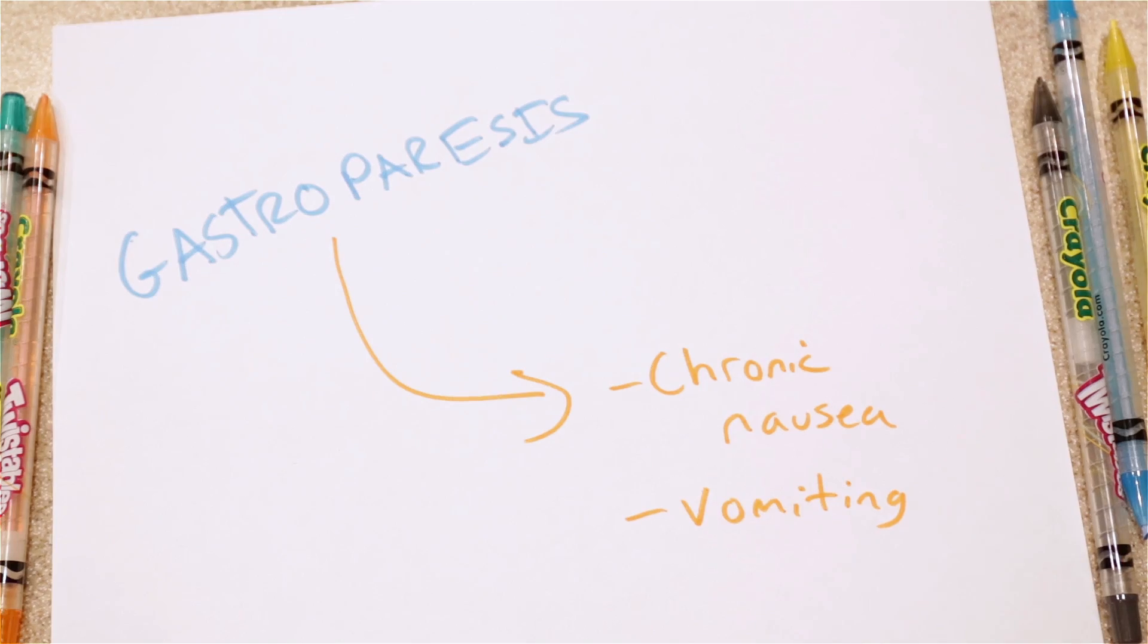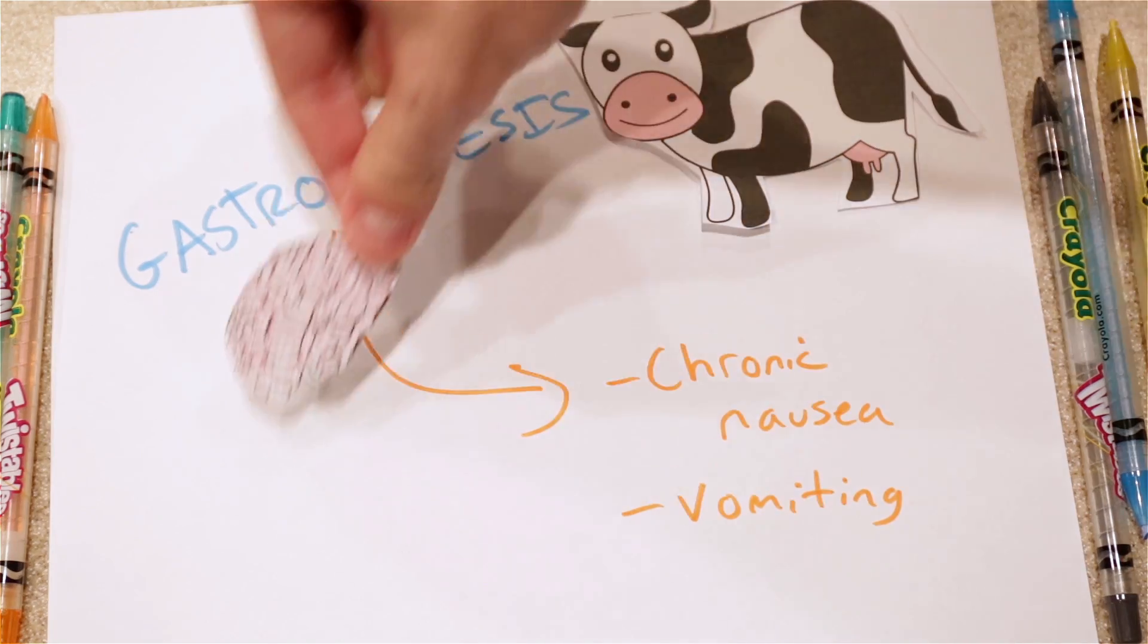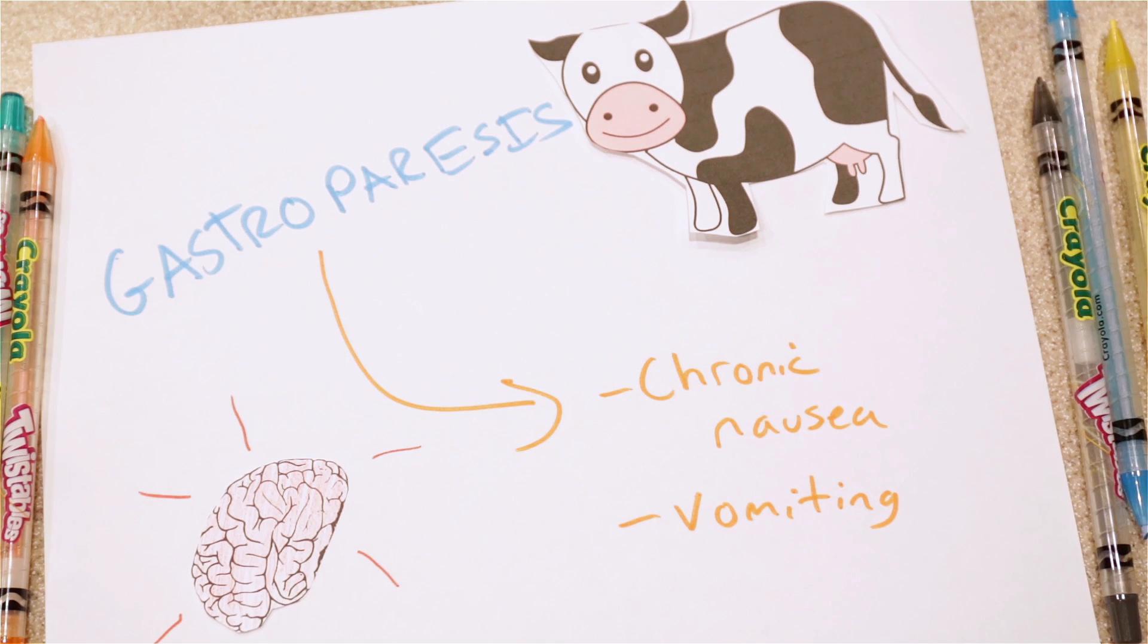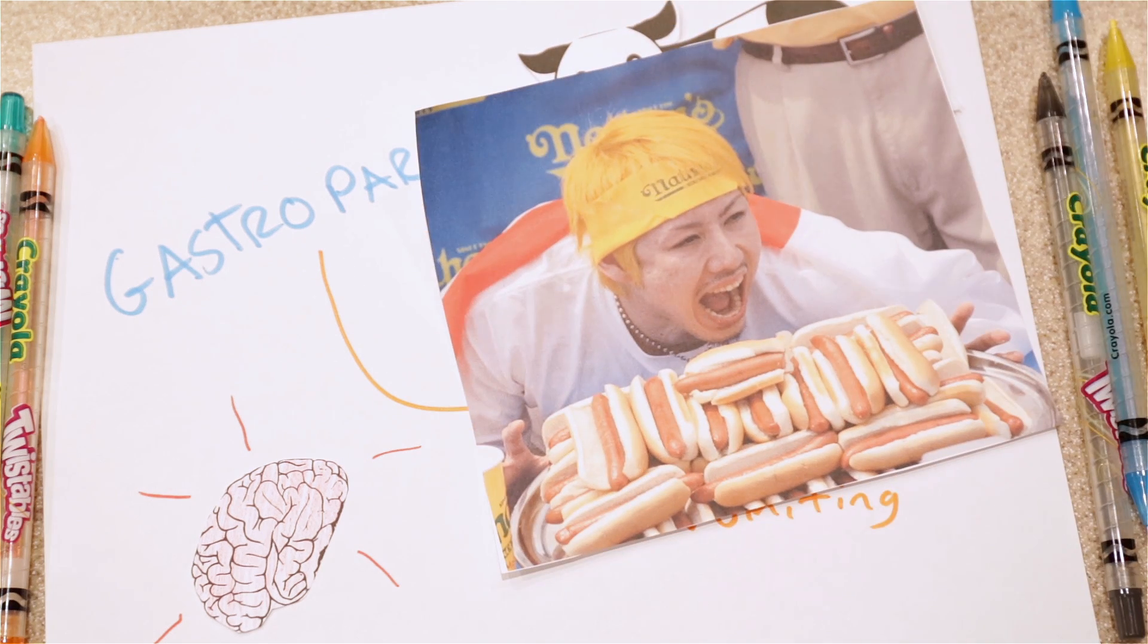And that's bad, because it's hard to stuff more cow brains in your mouth if you're throwing up. Cow brains? Kobayashi ate 57 cow brains in 15 minutes on Fox's 2002 Glutton Bowl.